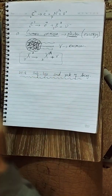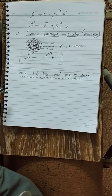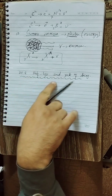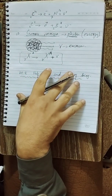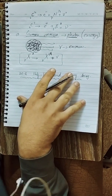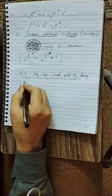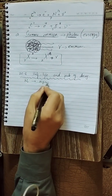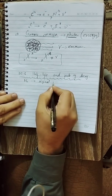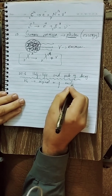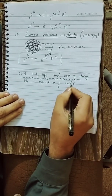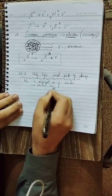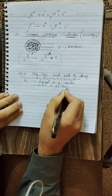Bismillahirrahmanirrahim, Assalamualaikum dear students. We have the next lecture of Chapter 20, section 20.8: Half-Life and Rate of Decay. First, I'm going to introduce some terms. N₀ means the original number of nuclei — nuclei is the plural of nucleus — so N₀ is the initial number of nuclei.